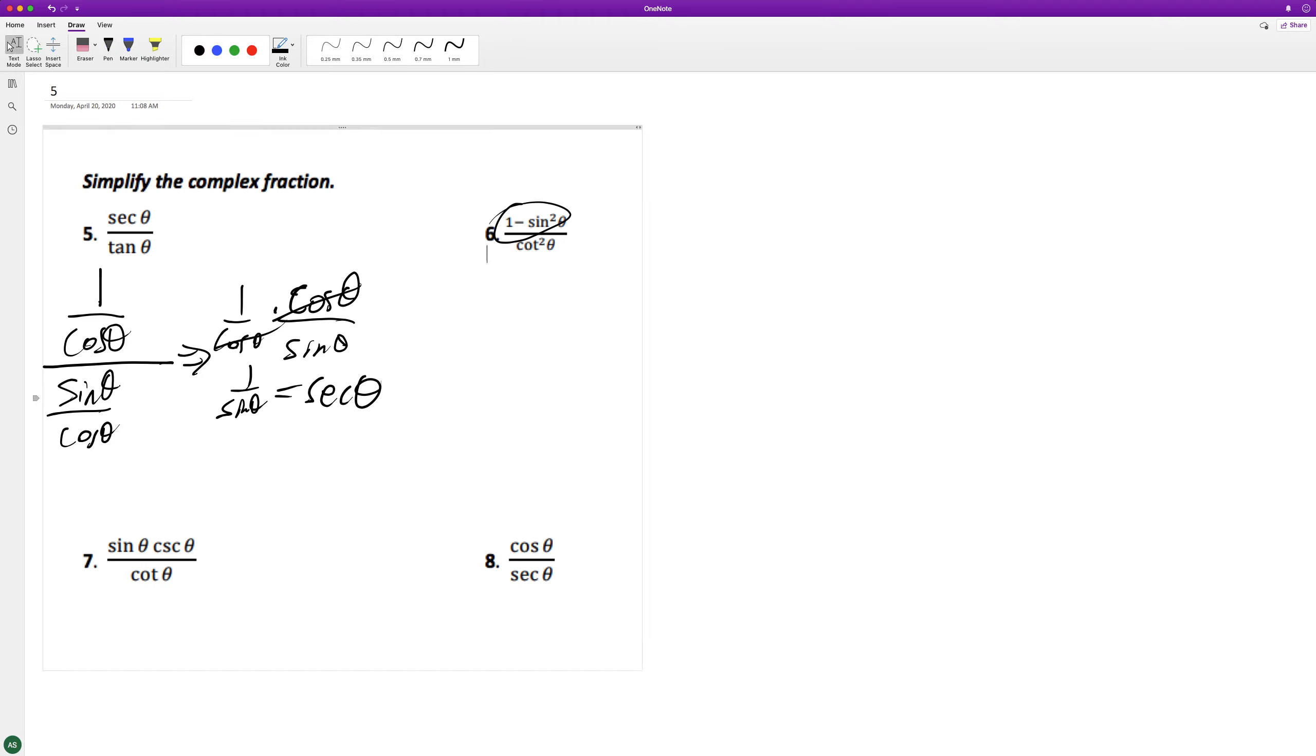All right, so here we can break this down into 1 minus sine squared theta is the same thing as the cosine squared theta. And then cotangent could be broken down to cosine squared theta over sine squared theta. And this can be rewritten as cosine squared theta times sine squared theta.